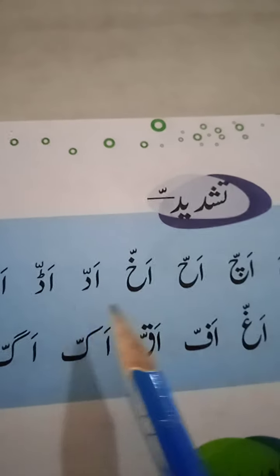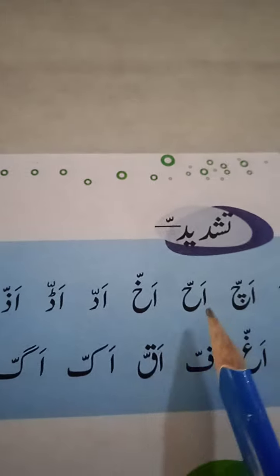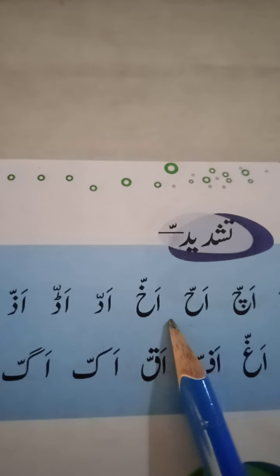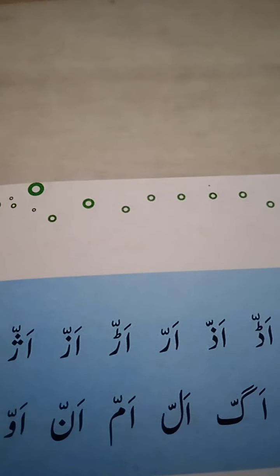Okay students, so like this all words we will repeat again — do bar padaengi. Alif he zavar ah, he zavar ha — Ah ha. Alif he zavar ah, he zavar ha — Ah ha. Alif dal zavar an, dal zavar da — Ad da.